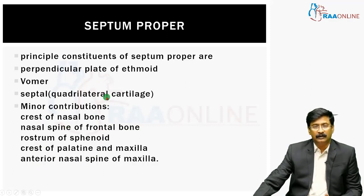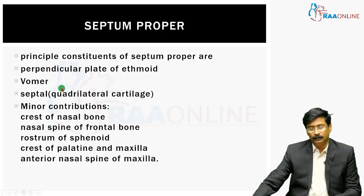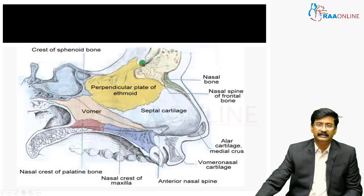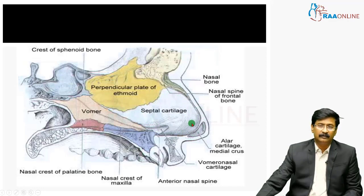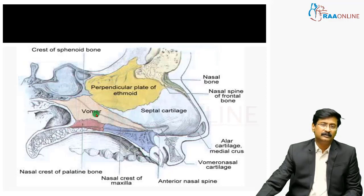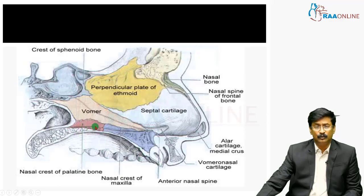The major components are the cartilage, perpendicular plate of ethmoid, followed by the vomer. As this picture shows, the septum proper is formed with the cartilaginous part forming the anterior-most part — the quadrilateral cartilage — then a major contribution from the perpendicular plate of ethmoid, then the vomer, and minor contributions from the crest of the sphenoid bone, nasal crest of palatine bone, nasal crest of maxilla, and the anterior nasal spine. You have to know this picture — it is formed by cartilage, bone, and a few minor contributions.